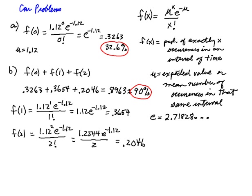This is an example of a Poisson probability distribution, and we're using the Poisson probability function to calculate the probability of a certain number of occurrences in an interval, in this case, of time.